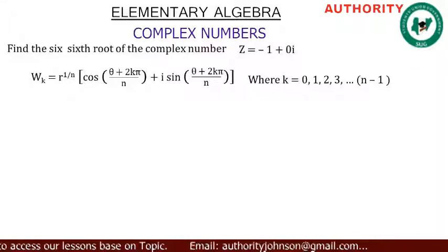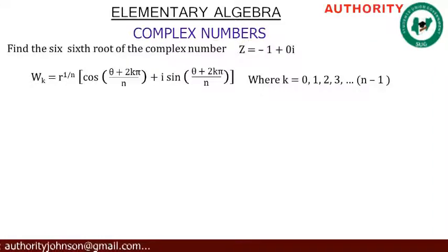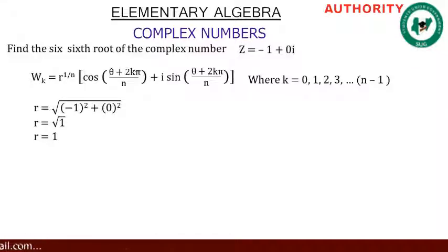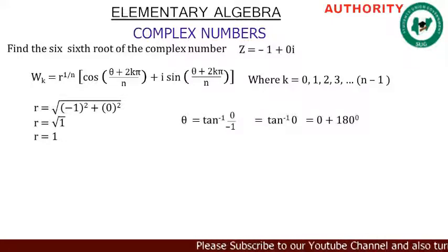We have the complex number z = -1 + 0i. Let's find r. r = √((-1)² + 0²). Zero squared is zero, minus one squared is one, so √1 = 1. Our r is equal to 1. Now let's find our theta.